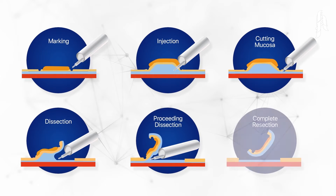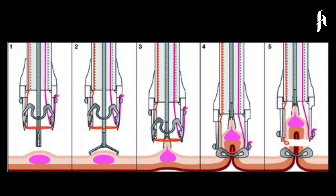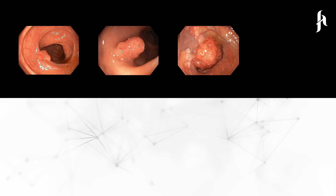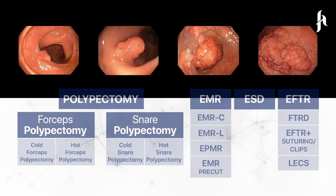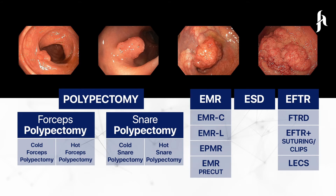Single-piece removal of the polyp is needed for confirming the diagnosis and complete resection. Today, these treatment methods are defined in Japanese and European guidelines. Decisions for treatment methods are made depending on the experience of the center. In our hospital, we follow Japanese advanced endoscopy guidelines. These methods range from basic forceps to endoscopic full thickness resection.